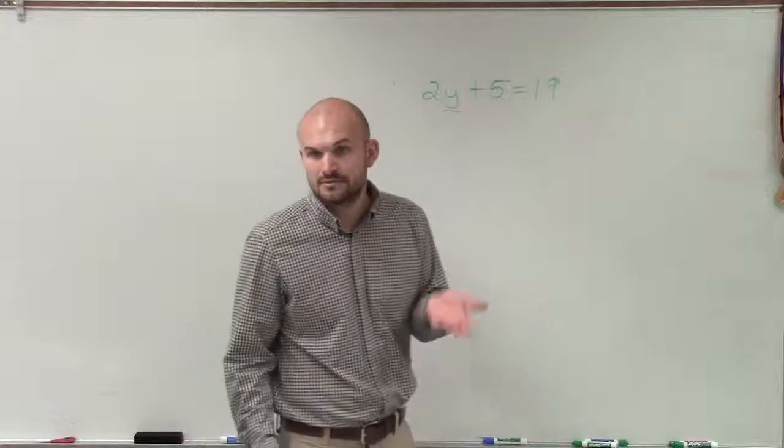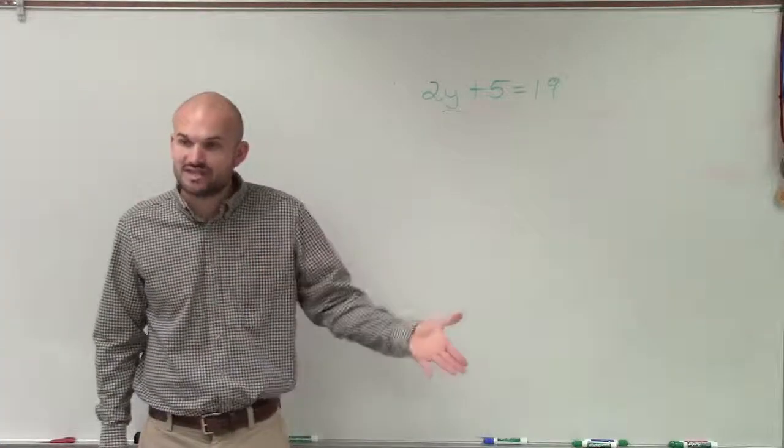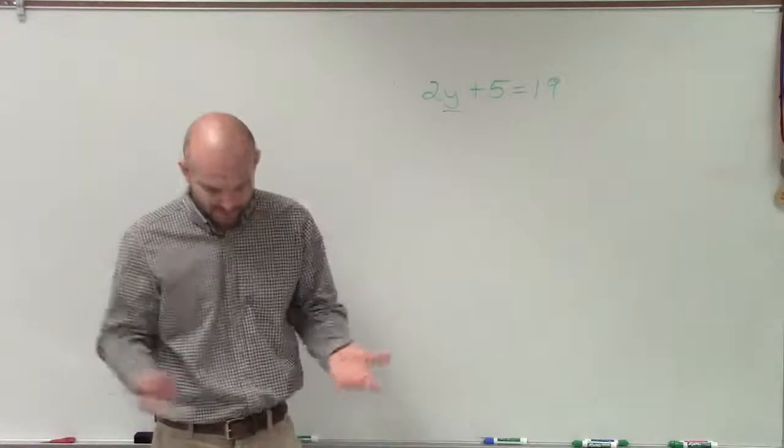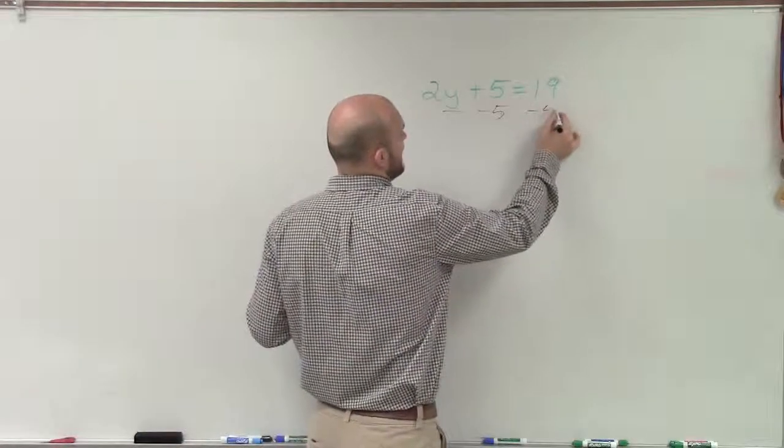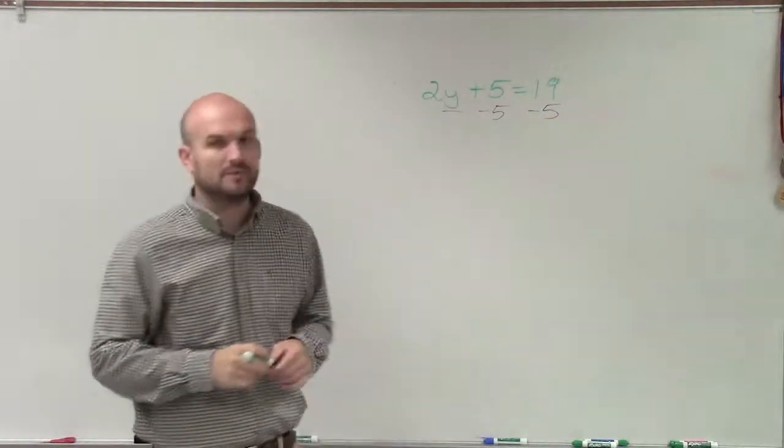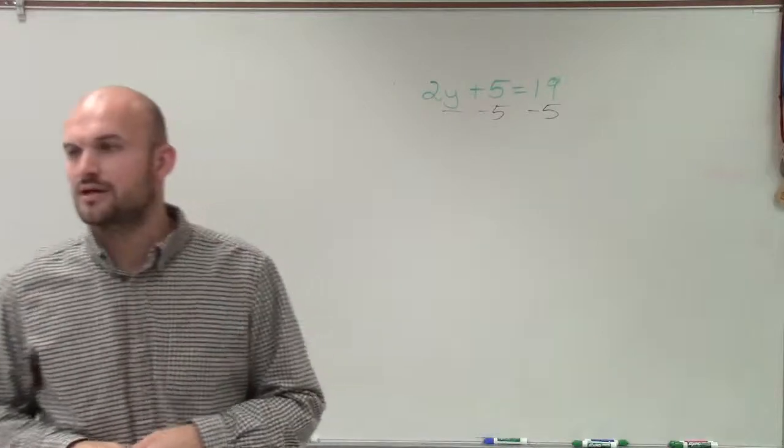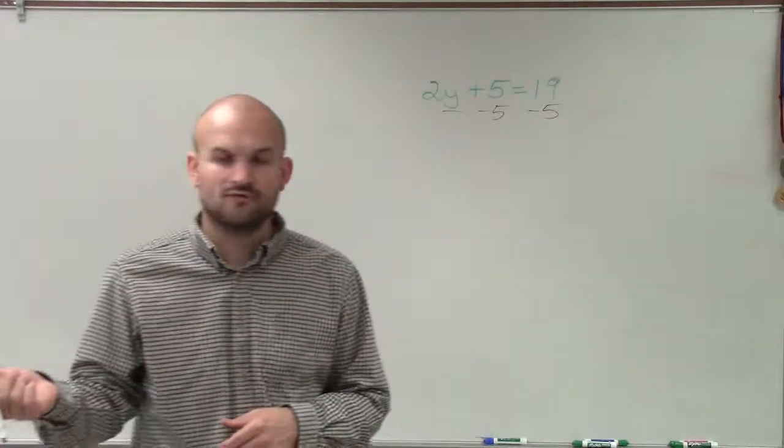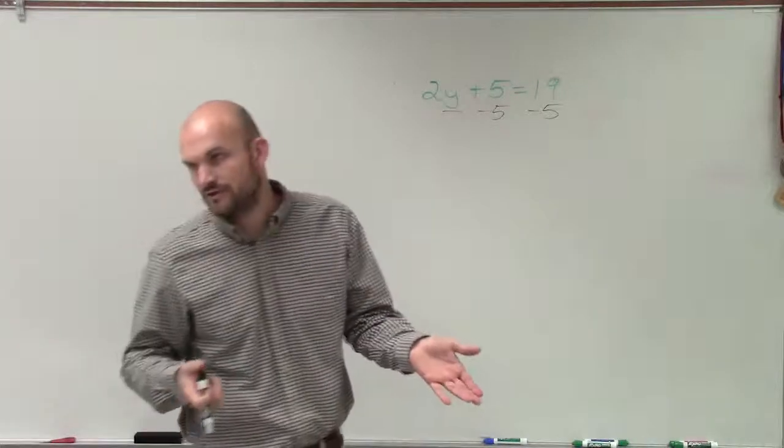You can say yes, it's being added. So to undo addition, I need to subtract. So I'll subtract five on both sides by applying what we call the subtraction property of equality. Because whatever you do on one side, you have to do on the other side, right?